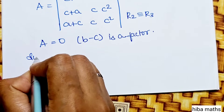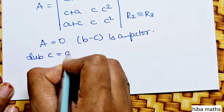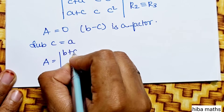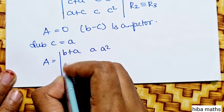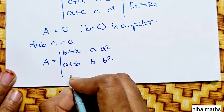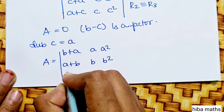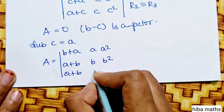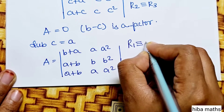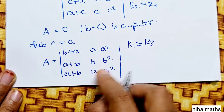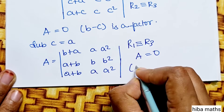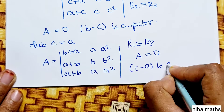Next, substitute c equal to a to test c minus a as a factor. The matrix becomes: b plus a, a, a squared; a plus b, b, b squared; a plus b, a, a squared. R1 is equivalent to R3, so the determinant value is 0. Therefore c minus a is a factor.